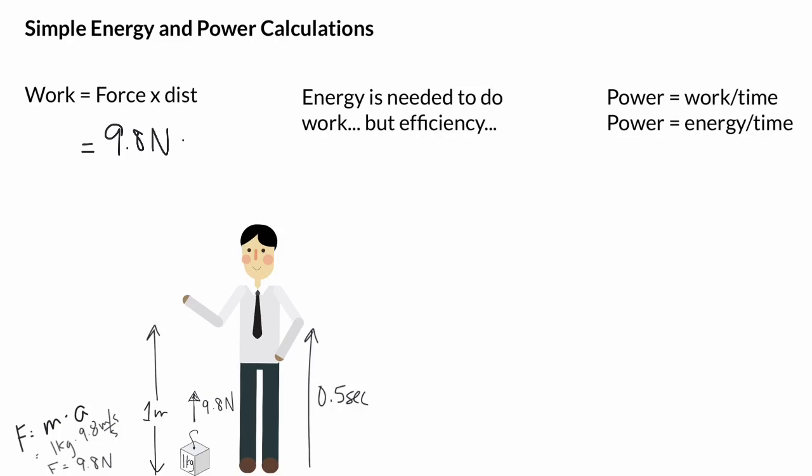This would give us our work. So work equals 9.8 as a number, but then the units—because we did force times distance, Newtons times meters—this is now the number of joules of work this guy did in order to lift that weight one meter. Now I want to say this really specifically: 9.8 joules of work were done to the box.